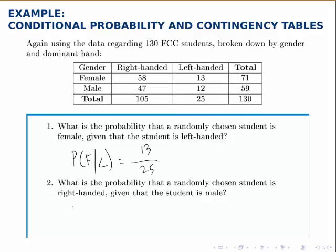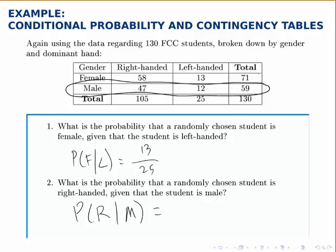Similarly for part two, if we want to know the probability that a randomly chosen student is right-handed given that the student is male, we need to restrict ourselves to the category that we're given. So we're given that the student is male, so we know that we're in this row — the male students — and we're asking if we're choosing just from this pool of 59 people, what proportion of those are right-handed? Well, there are 47 right-handed students in this category and 59 total students, so the probability is 47 divided by 59.